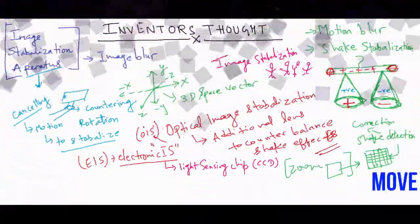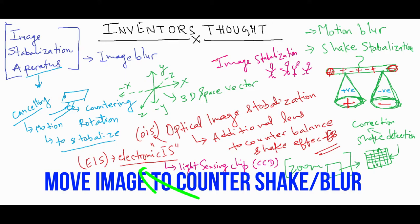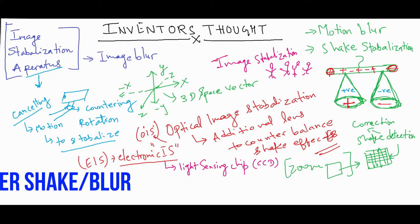Electronic image stabilization uses light sensing along with movement of the image or scaling of the charge coupled device.